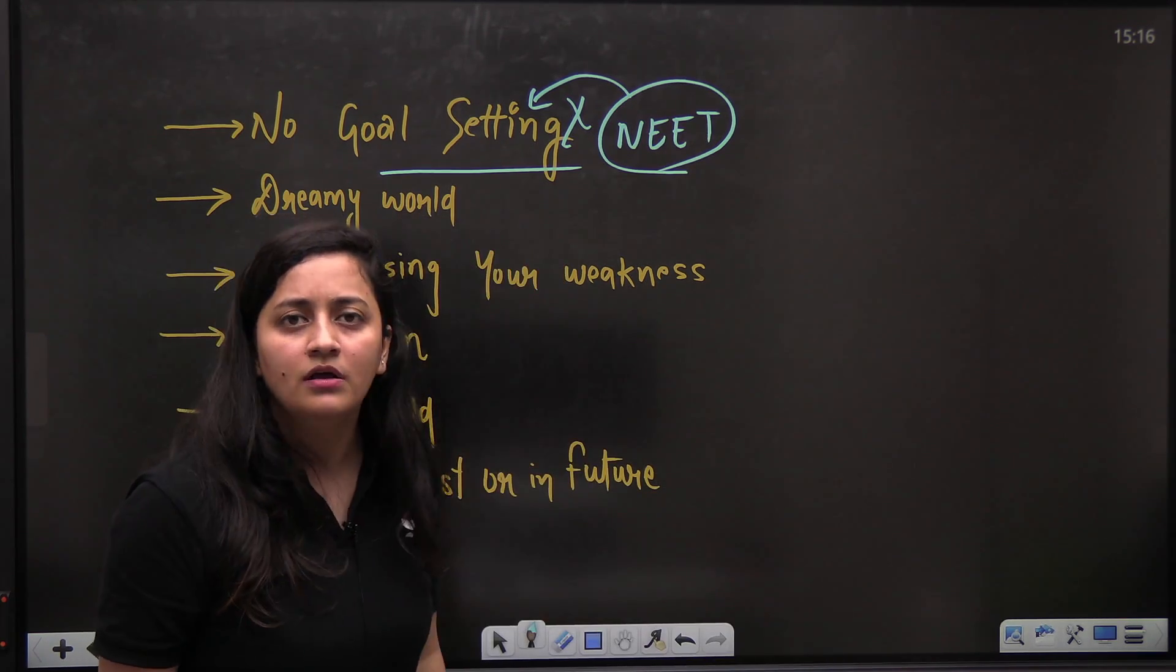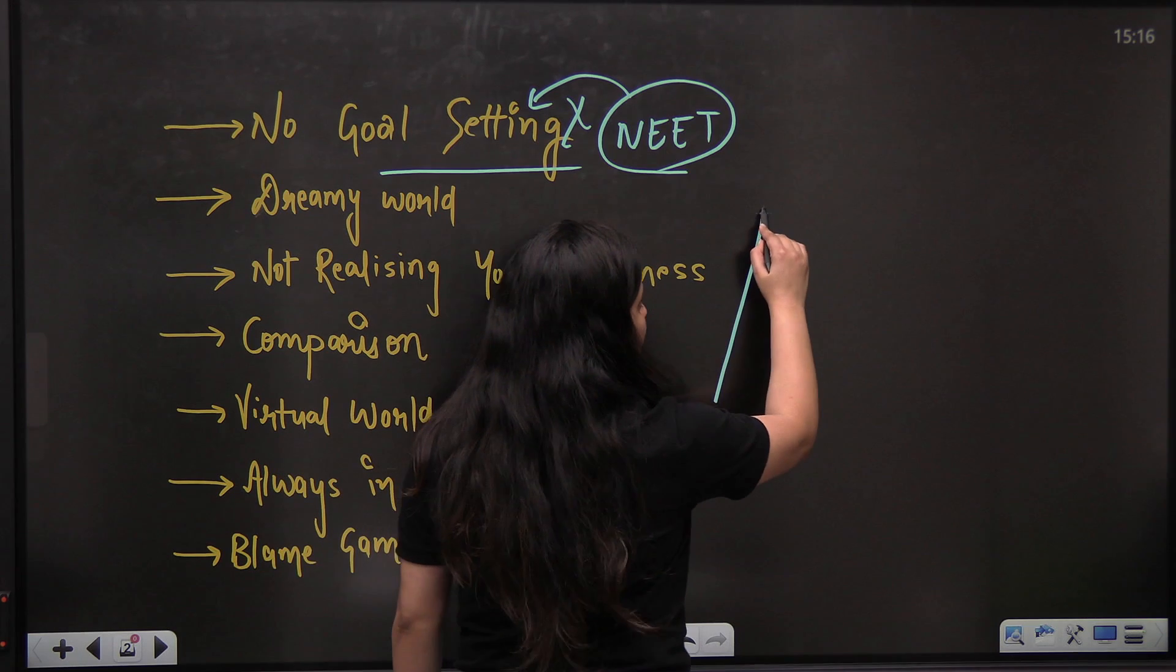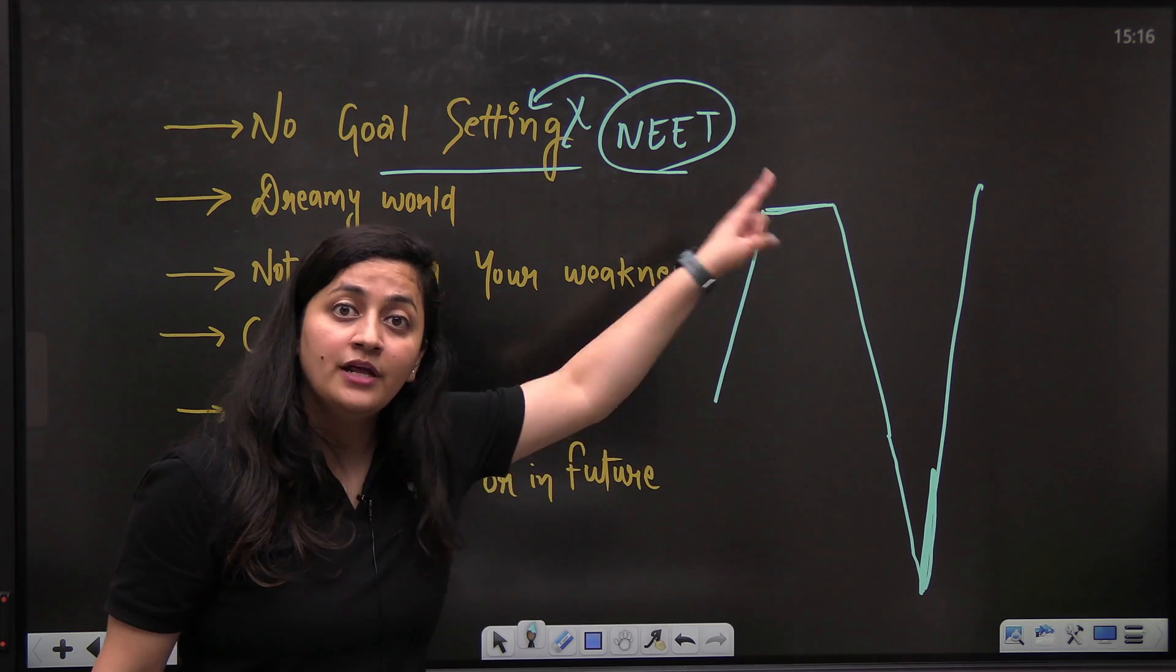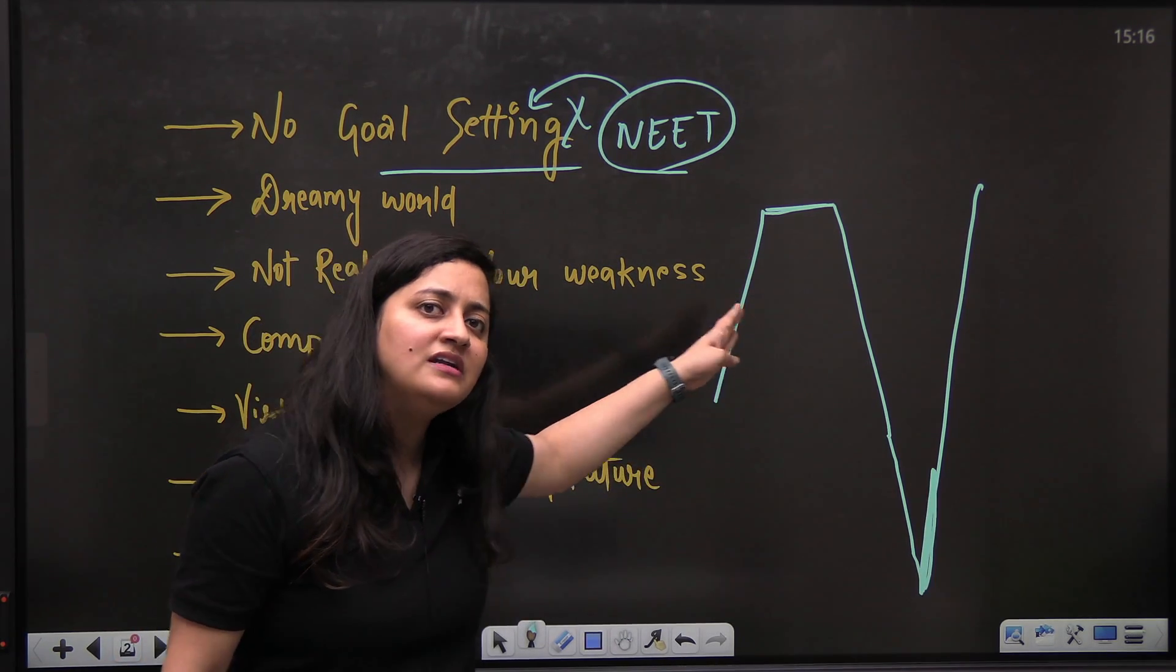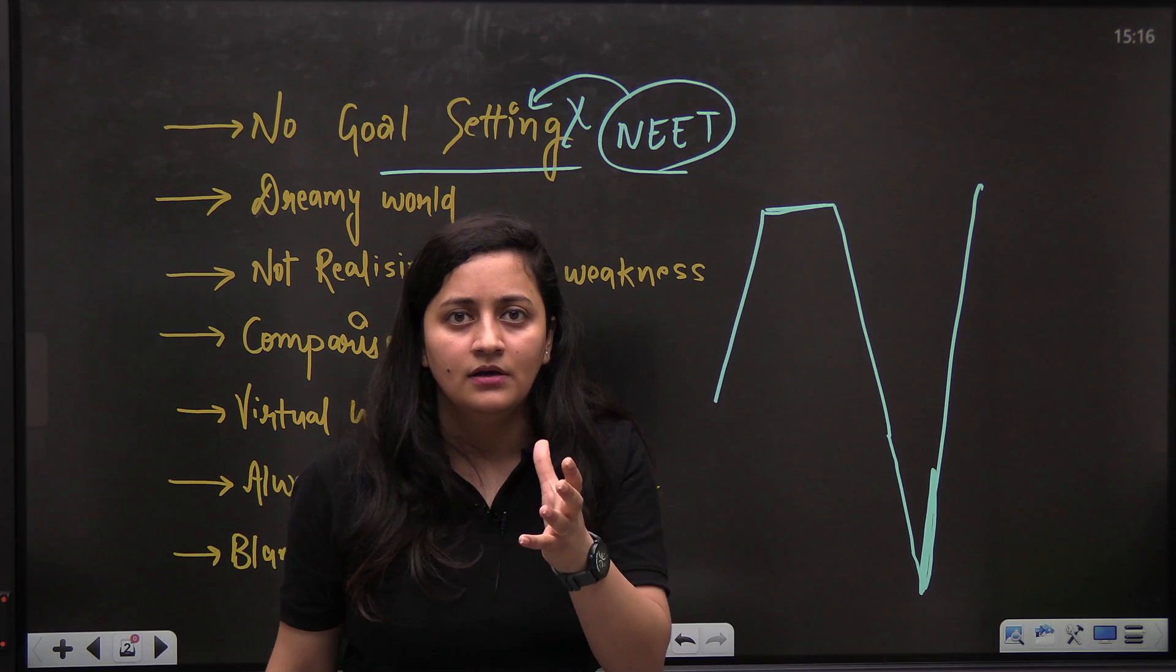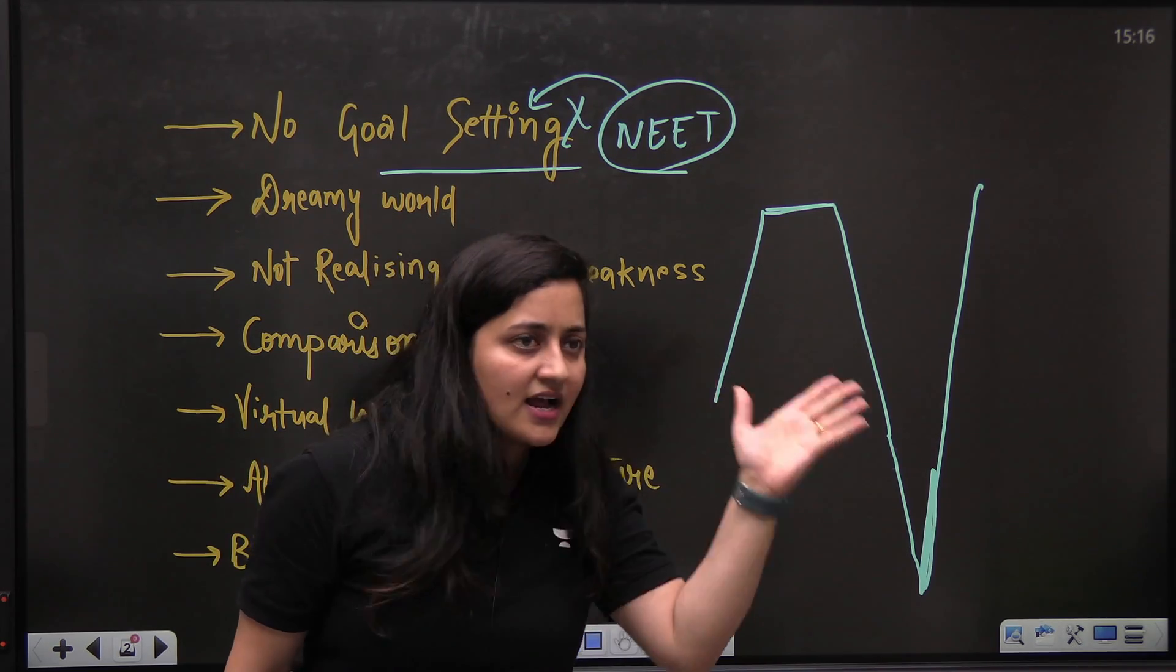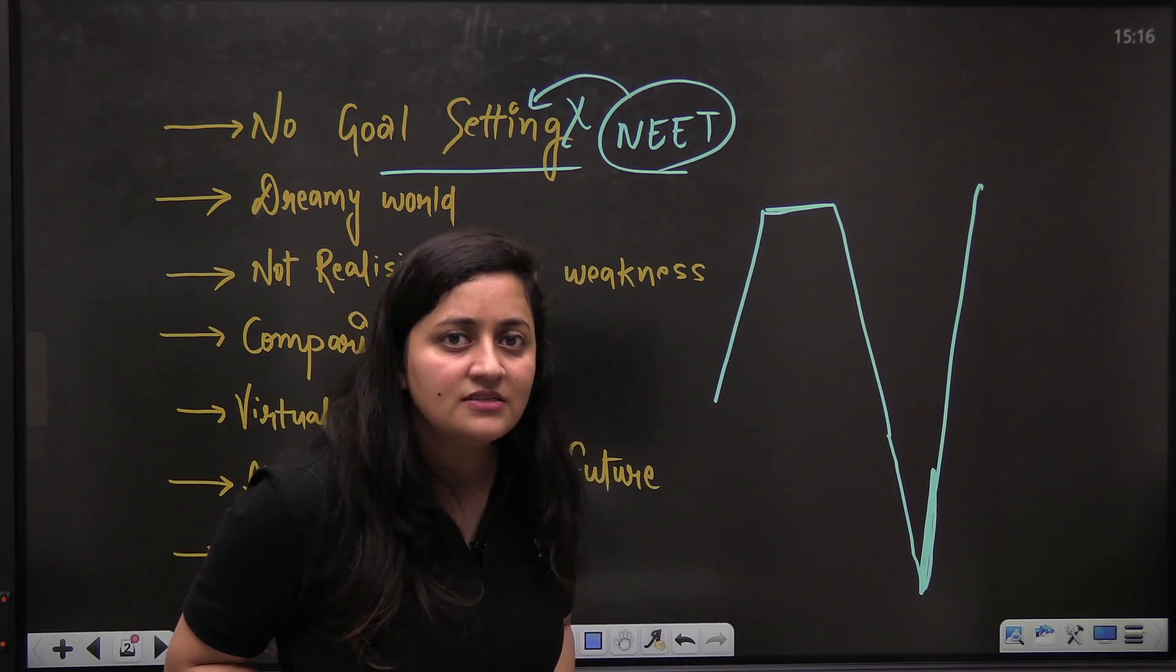The second thing, you guys are in a dreamy world. Initially, you start your preparation with that much of energy and slowly, slowly it will become like this and suddenly like this, this, this and now you need the motivation to go up. Now you need a mentor. Now you need a guide. But why were you not listening to us when we were telling you this thing initially? Come out from your dreamy world. If you want to qualify the NEET examination, no doubt six months are sufficient. But why are you waiting for last six months? Why can't you start now? Why can't you finish your syllabus in six months and later on you can just practice?